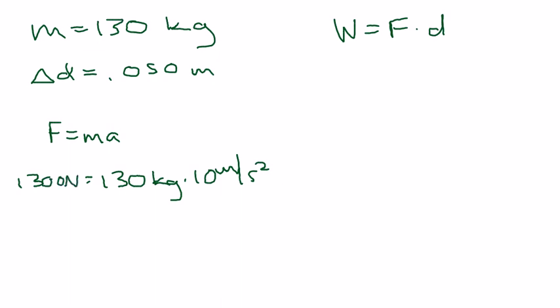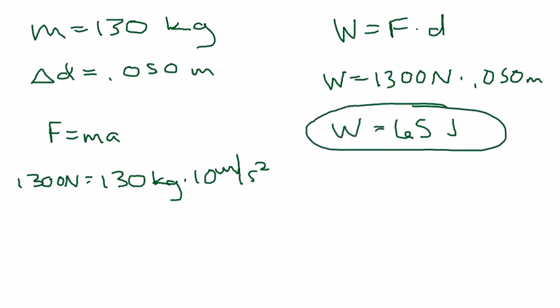Now we're set up and we can plug into that work equation. So work equals 1,300 newtons times 0.050 meters. Newtons times meters is going to give us joules. And we should get 1,300 times 0.05 is 65 joules of work. So your answer for number one should be 65 joules.